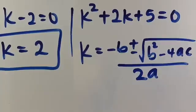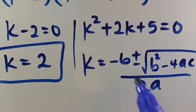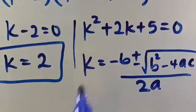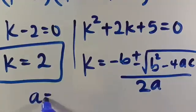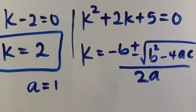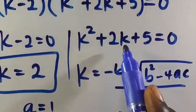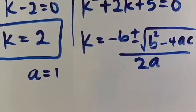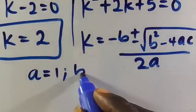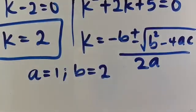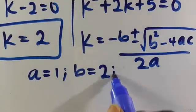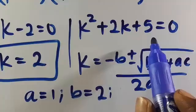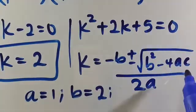We identify the coefficients: the coefficient of k² is 1, so a equals 1. The coefficient of k is 2, so b equals 2. The constant term is 5, so c equals 5. Now let's substitute everything into the formula.